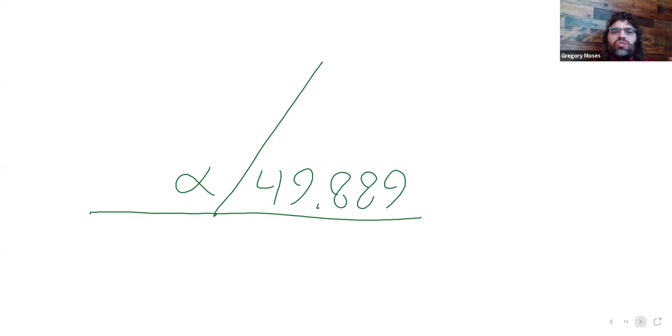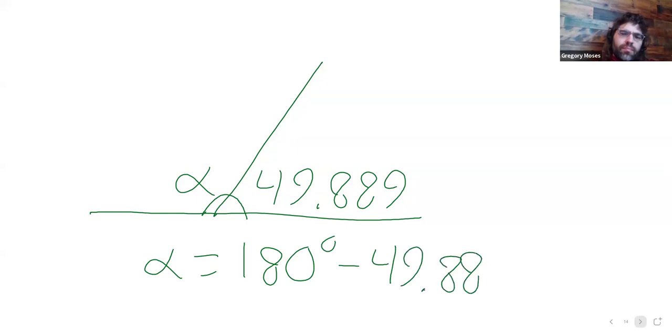These angles together give you 180 degrees. So to find alpha, we have to subtract.